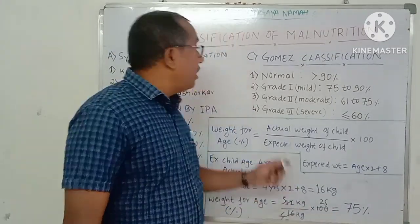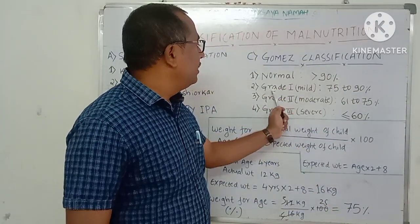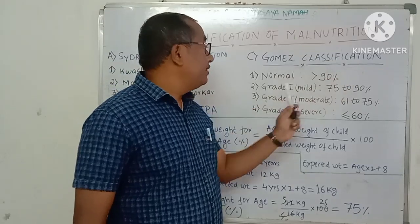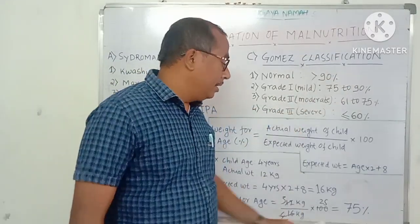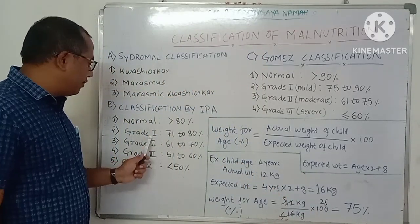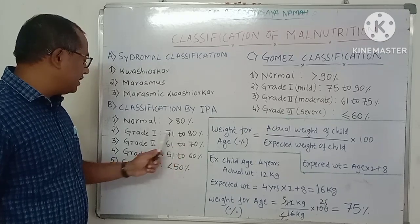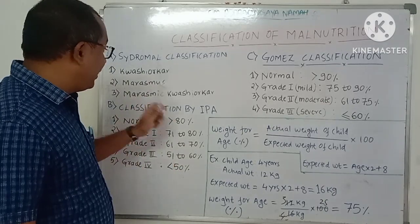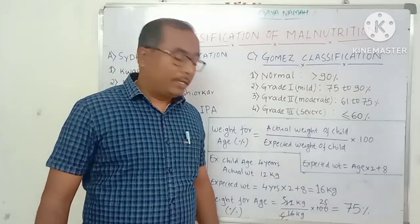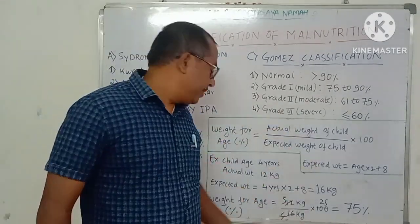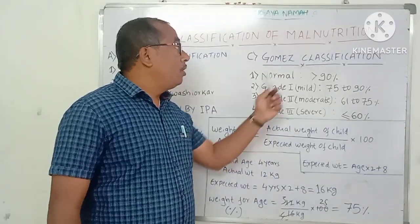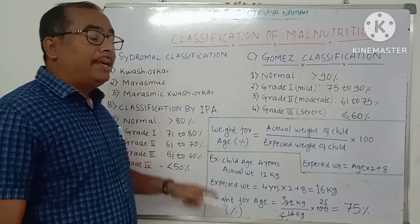According to Gomez classification, 75% lies between 75 to 90%, so it is Grade 1 or mild malnutrition. Using the same 75% for Indian Pediatric Academy, it lies between 71 to 80%, which is also Grade 1 malnutrition. So both classifications give Grade 1 or mild malnutrition. This is how you calculate weight for age percentage and classify or grade a child.